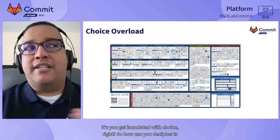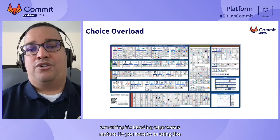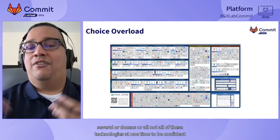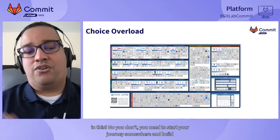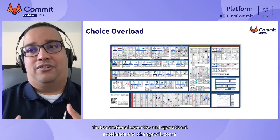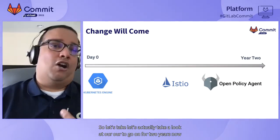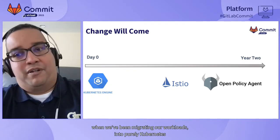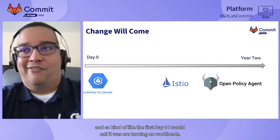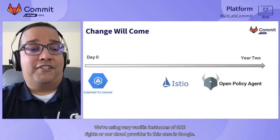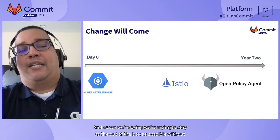With so much choice you get inundated — how do you decipher bleeding edge from mature? You don't need to use dozens or all of these technologies at once to be confident. You need to start your journey somewhere and build operational expertise. Change will come. Our migration at Harness has been going on for two years, and on day zero we were using very vanilla GKE, staying as out-of-the-box as possible without writing tons of custom resources and operators.